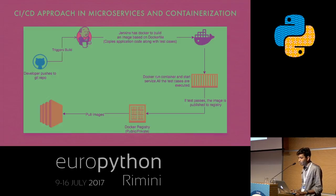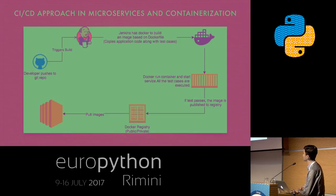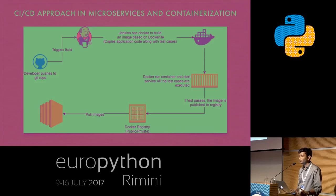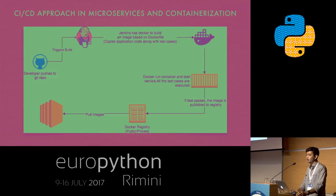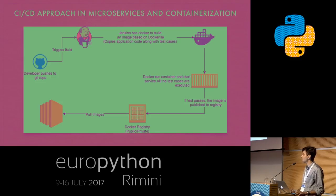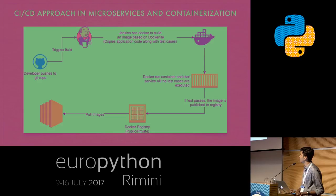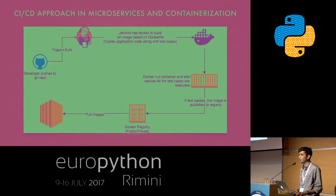Let's talk about how to deal with continuous integration and continuous deployment in microservices and containerization. This is with respect to Jenkins, but you can also use GitLab CI runners and Circle CI to automate this. When a developer pushes any change to the Git repository, a webhook triggers a Jenkins build. Jenkins uses Docker to build an image based on the Dockerfile. Once the container is up and running, you can run all the test cases. If all test cases pass, you can push your Docker image to the Docker registry and inform all running instances to pull the latest version.